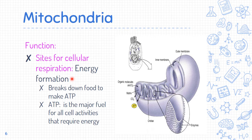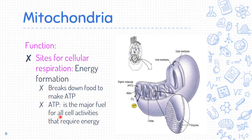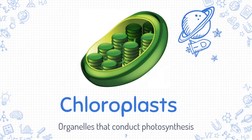The energy formation done by the mitochondria involves breaking down food — for example, carbohydrates — into ATP. ATP, also known as adenosine triphosphate, is the major fuel for all cellular activities that require energy. All activities of an organism, such as walking and thinking, require this energy in the form of ATP.